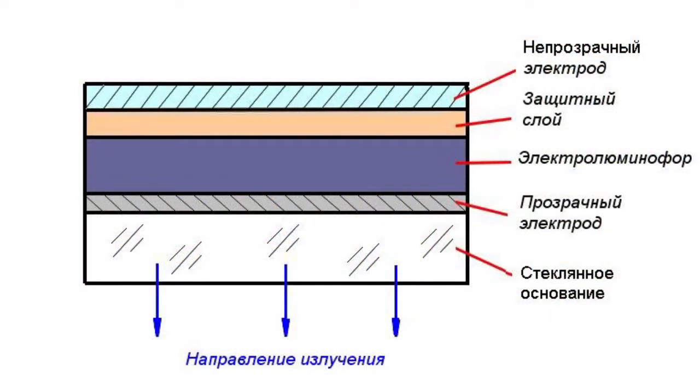Powder emitters represent a multi-layer structure. This emitter is based on a cell containing an electroluminescent film. A luminescent layer, a mixture of phosphor and dielectric, a protective or reflective layer, and a second non-transparent electrode are consistently applied on the glass base with a conductive transparent layer.